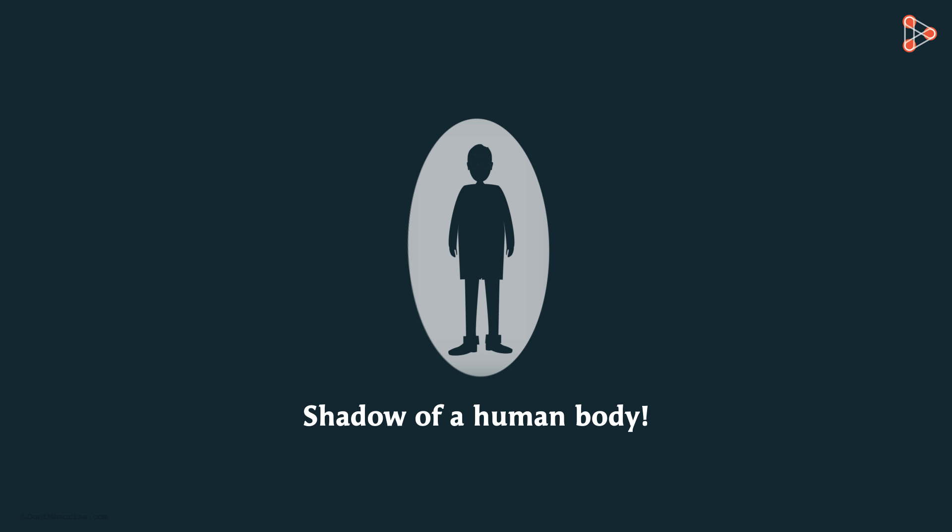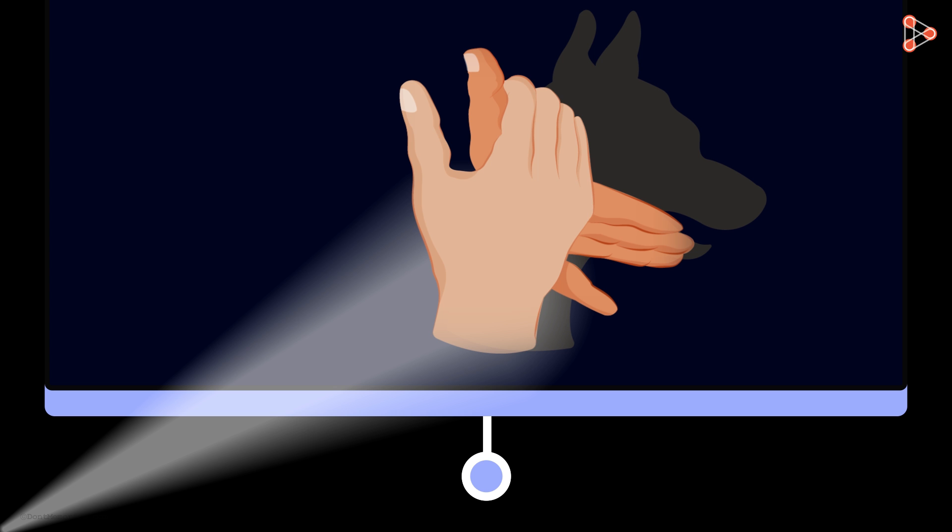But sometimes, they can also be misleading. For instance, can you name the body of which this is a shadow? You'd probably say it's that of a dog. But it's just human hands playing the trick.